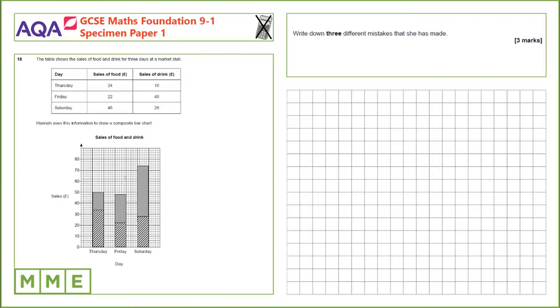So the first mistake we notice is that we don't actually know which bar is which. If we look at the data we can tell, but if we didn't have the data we wouldn't know which bar represents food and which bar represents drink. So the first thing that she hasn't mentioned is there's no key.